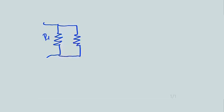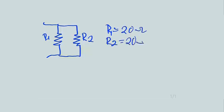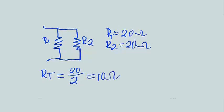Example: R1 and R2. R1 is equal to 20 ohms, R2 is equal to 20 ohms. Using the formula, because this is a combination of two resistors having equal values, RT is equal to the value of the resistor — which is 20 — divided by 2. 20 divided by 2 equals 10 ohms. Therefore, two resistors connected in parallel with equal values of 20 ohms gives a total resistance of 10 ohms.